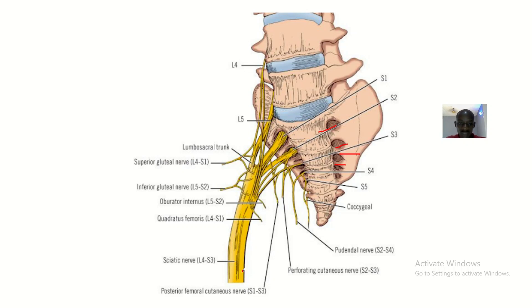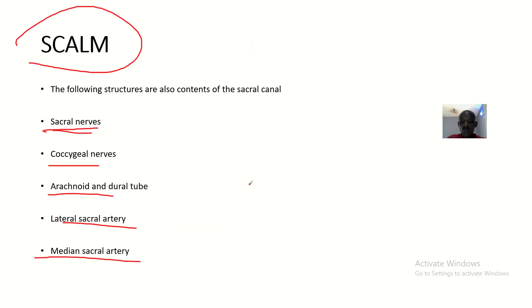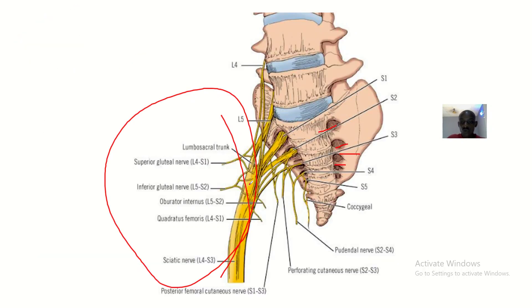All these nerves are sacral nerves because they come out from the sacral canal. But the lower one is what we call the coccygeal nerve, which is next to the coccyx.